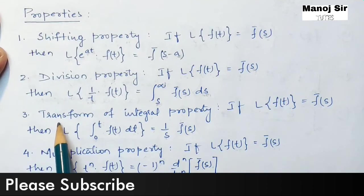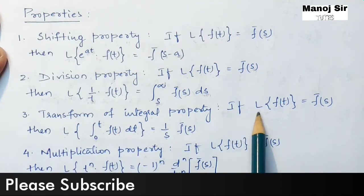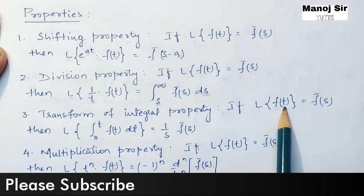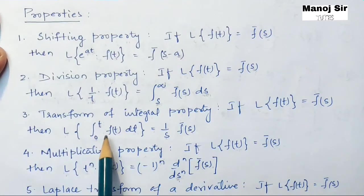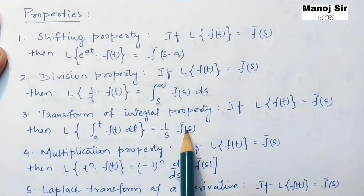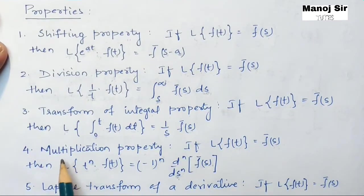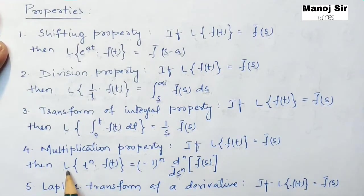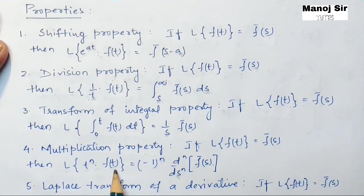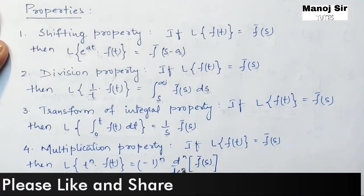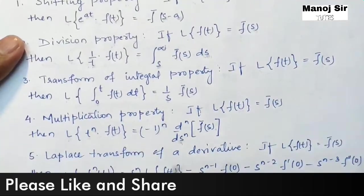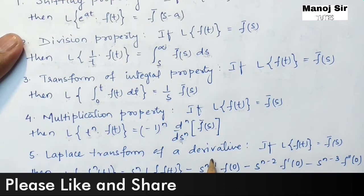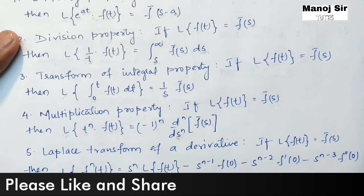The third property is the transform of integral property: if Laplace transform of f(t) equals f-bar of s, then Laplace transform of the integral from 0 to t of f(t) dt equals 1 upon s times f-bar of s. The fourth property is the multiplication property: Laplace transform of t to the power n into f(t) equals minus 1 to the power n times the nth derivative of f-bar of s with respect to s. We are not discussing the fifth part on Laplace transform of derivatives here.